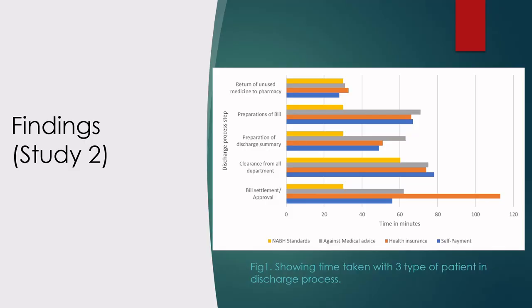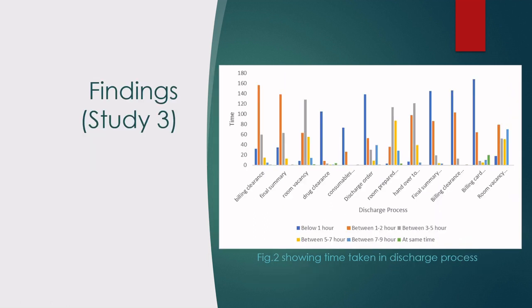Another finding clearly depicts that the average time for each step across all types of patients is much larger than the NABH standard of 180 minutes. An individual patient takes 278 minutes, an insured patient takes 337 minutes, and a patient leaving against medical advice takes 302 minutes. Notably, the time taken for insured patients is the highest. Another graph shows increased average turnaround time in discharge intimation to handover of the patient and from discharge intimation to room vacancy. If NABH guidance is followed, proper documentation will result in a reduction in turnaround time and improved patient satisfaction.